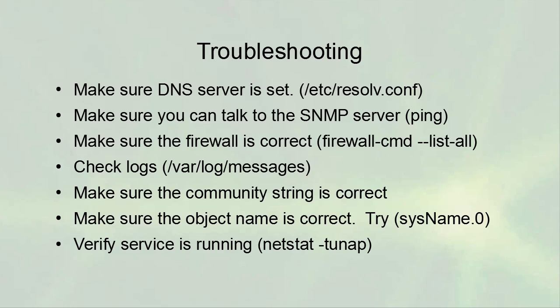For troubleshooting: make sure your DNS server is set correctly, verify you can ping and port scan the SNMP server, and confirm the firewall is open. Check your logs and ensure the community string is correct — if you changed it, update your commands accordingly. Verify you have the correct object name; 'sysName.0' is a good one to test with. Finally, confirm the service is running using 'netstat -tunapete' to list active services. That is the end of this chapter.